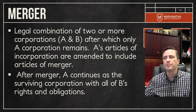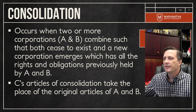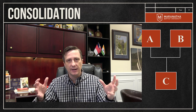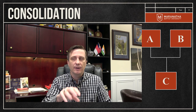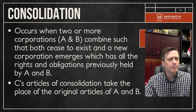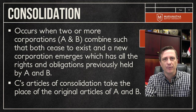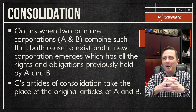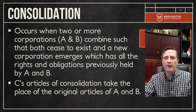The second option is consolidation, which occurs when two companies are relatively the same size and strength. Instead of one surviving, they combine to form a completely new entity with a new name — A and B become C. For example, if Google and Microsoft were to combine, neither is clearly bigger, so you'd have a consolidation rather than a merger, requiring an entirely new name.